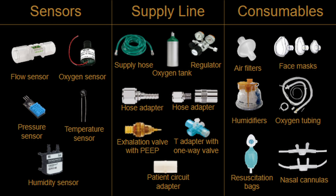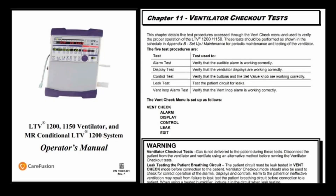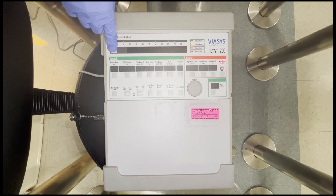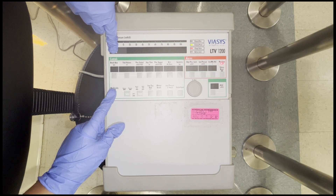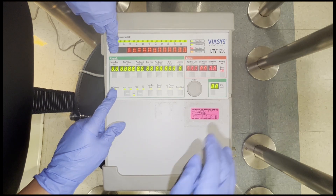Consumables are parts that should be replaced for each patient. They include self-inflating bags, filters, and the patient circuit. Most ventilator units have several built-in self-tests for easy testing. In this video, we will outline the self-tests of the CareFusion LTV 1200 model; other models should have similar processes. Look for a section about testing or maintenance in your manual. On the LTV 1200, the special menu is accessed by holding select while turning the ventilator on.